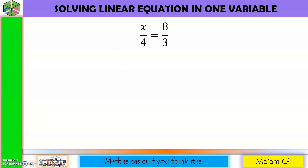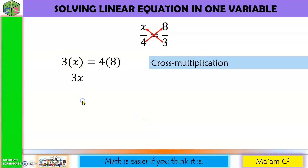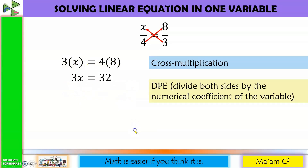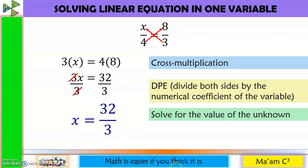Another technique: if we have a fraction on each side of the equation, we can use cross multiplication. So 3 times x equals 4 times 8, giving 3x equals 32. Applying DPE — dividing both sides by 3 — we get x equals 32 over 3. Same answer as before.